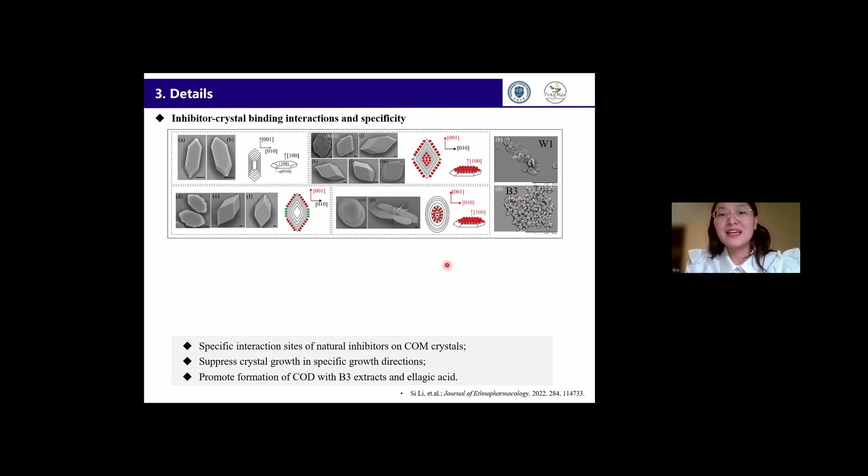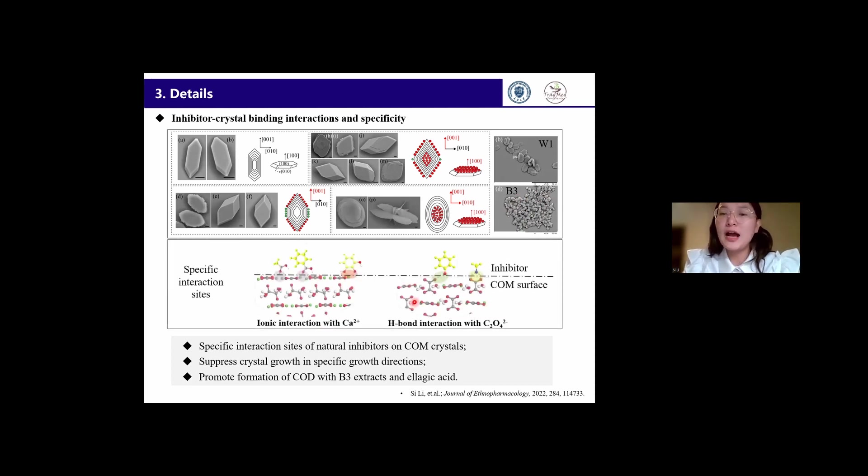Moreover, by analyzing COM crystal arrangement, we have found the inhibitor could inhibit the crystal growth by forming ionic interactions with calcium ions or forming hydrogen bond interactions with oxalate ions on crystal surfaces.